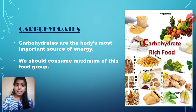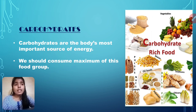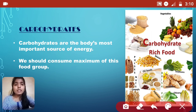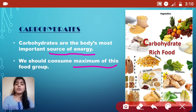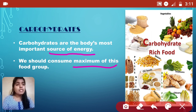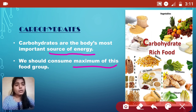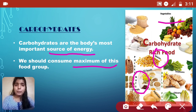First one — carbohydrates. What are carbohydrates? Carbohydrates are the body's most important source of energy. We call it energy-giving food, and we should consume the maximum of this food group so we can be healthy. Examples of foods from which we can get carbohydrates include pulses, maize, vegetables, nuts, cereals, etc.